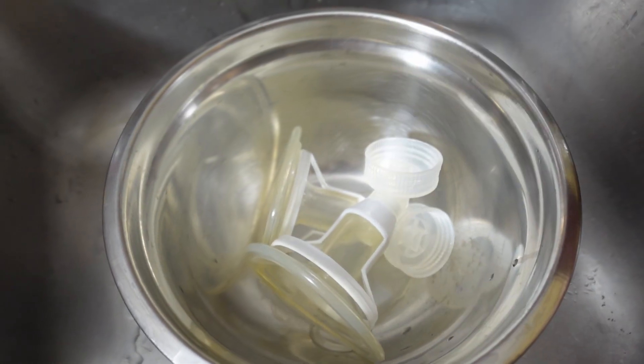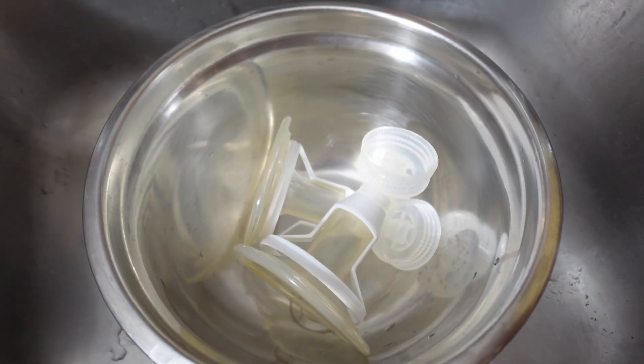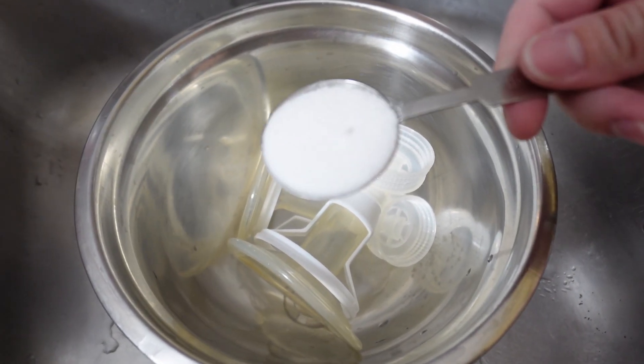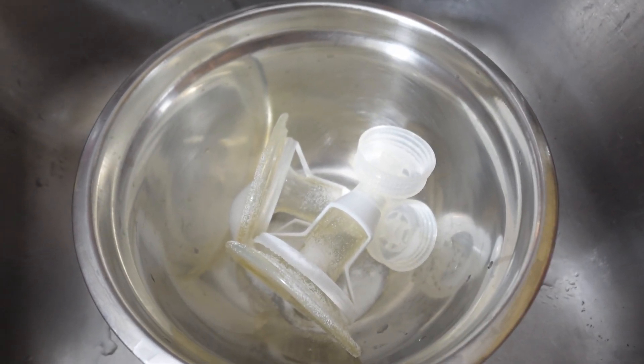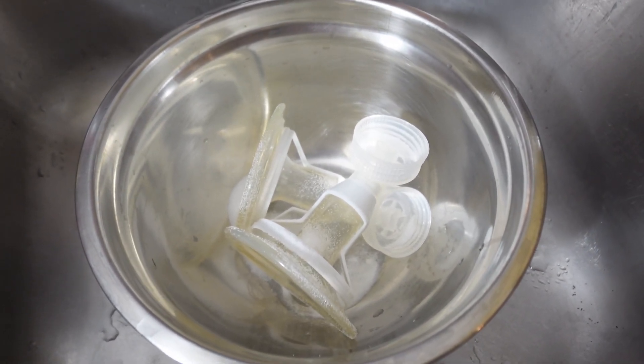So what we're going to do is a citric acid and boiling treatment. You have a tablespoon of food grade citric acid. You just add that directly to your parts.